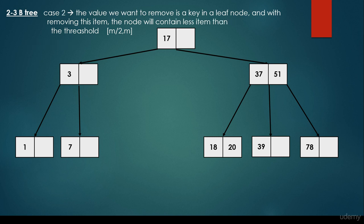What about Case 2, when the value we want to remove is a key in a leaf node, and with removing this item the node will contain fewer items than the threshold? In this case we have to merge 2 nodes.